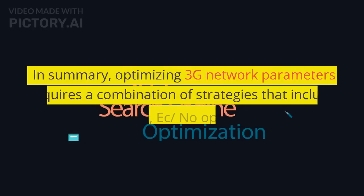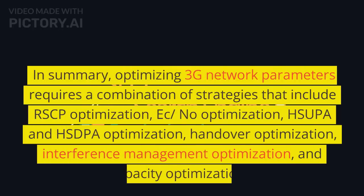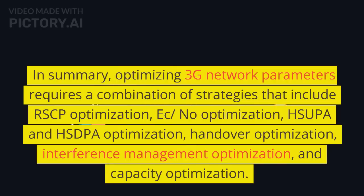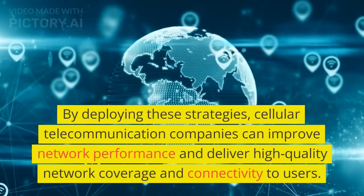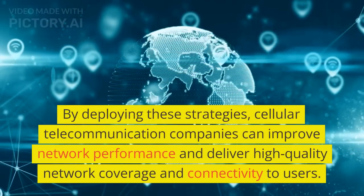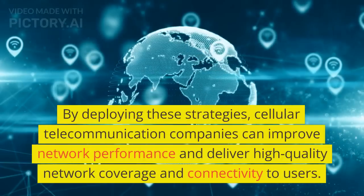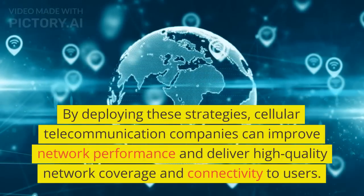In summary, optimizing 3G network parameters requires a combination of strategies that include RSCP optimization, Ec/No optimization, HSUPA and HSDPA optimization, handover optimization, interference management optimization, and capacity optimization. By deploying these strategies, cellular telecommunication companies can improve network performance and deliver high-quality network coverage and connectivity to users.